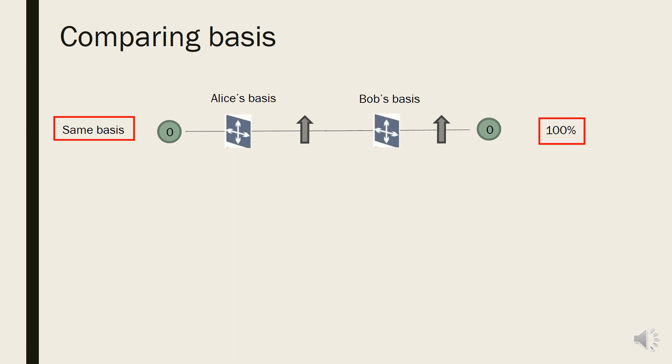Then what about the case that Alice and Bob chose different bases? Let's say Alice sent photon with 0 bit with rectilinear bases, while Bob chose diagonal bases. Then Bob measures vertically polarized photon with diagonal bases. This measurement would return either 45 or 135 degree polarization randomly. The result doesn't have any information about its initial polarization. Because it randomly happened, the probability that Alice and Bob have the same bit drops to 50%.